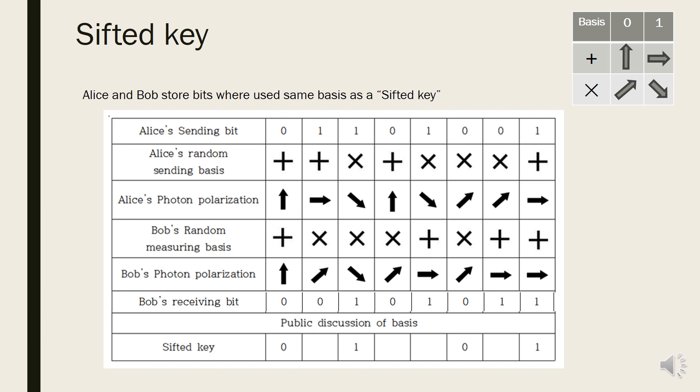In earlier stage, Alice created random bits 0, 1, 1, 0, 1, 0, 0, 1, and randomly selected bases either rectilinear or diagonal. Then Alice transmitted each photon by quantum channel. Without knowing which bases Alice used, Bob selected each bases for each photon randomly, and they have their own raw key.